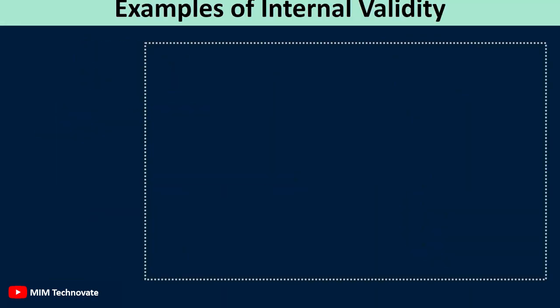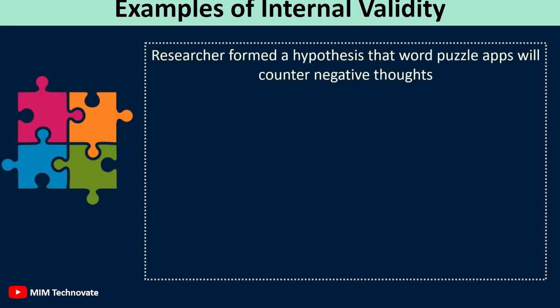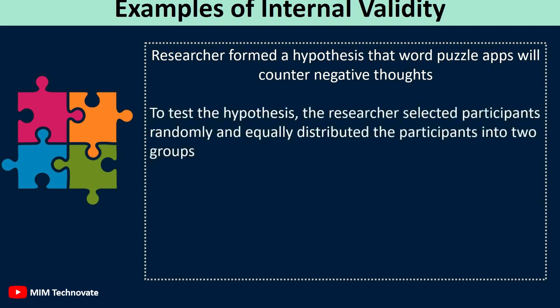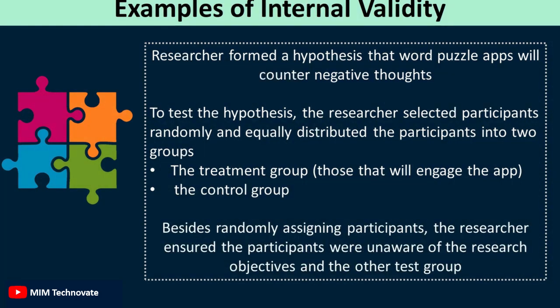Example of internal validity: A researcher formed a hypothesis that word puzzle apps will counter negative thoughts. To test the hypothesis, the researchers selected participants randomly and equally distributed them into two groups — the treatment group, those that will engage the app, and the control group. The researcher also ensured the participants were unaware of the research objectives and the other test group.